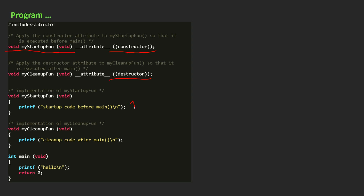This line will be printed at the first location. Then the main function will be executed and it will print 'hello'. So at the second printf statement, hello will be printed. After that it will return 0.